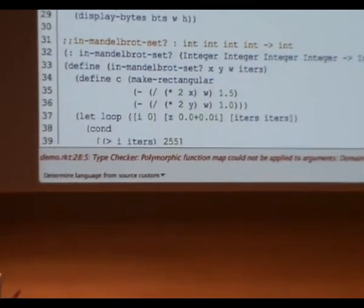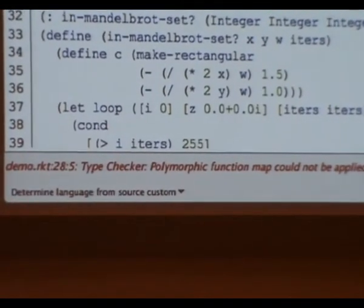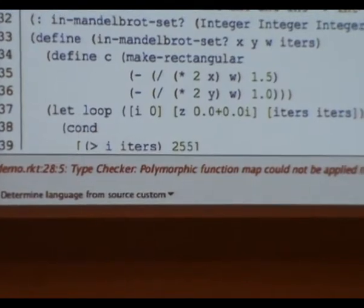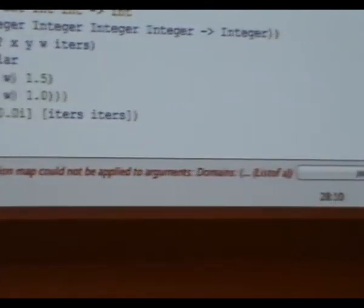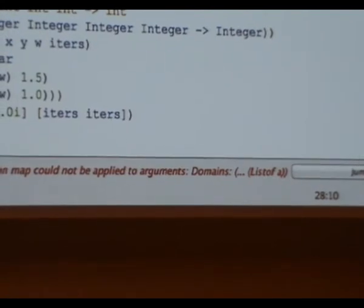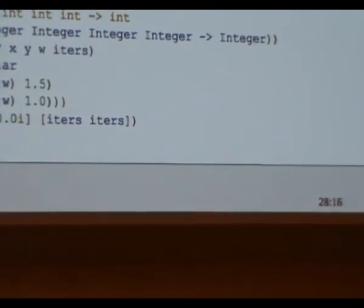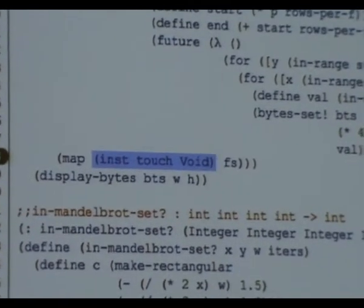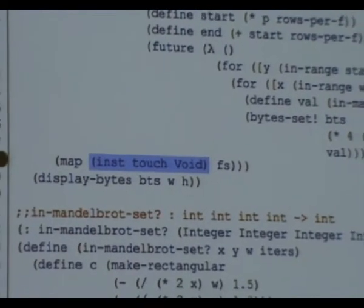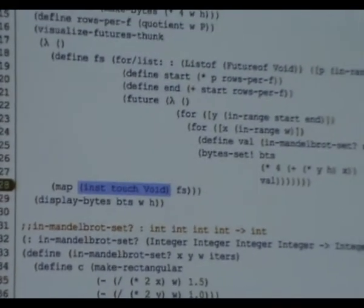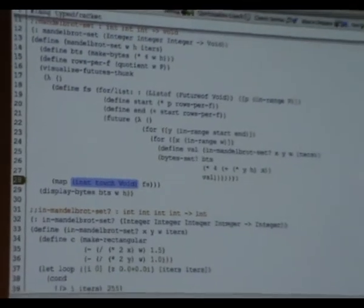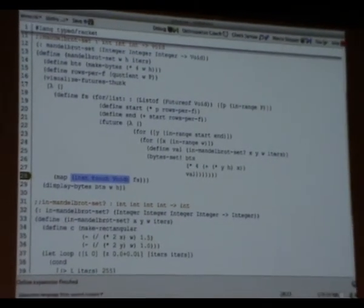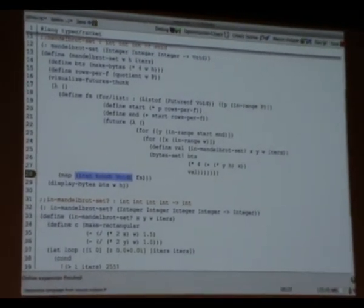So, what we'll do, is annotate this for list construct, and tell the typed Racket what the type of this, the return type of this form is. So, what we're actually returning here, is a list of future void. So, now, we have one other problem. Remember, touch is also polymorphic. So, typed Racket understands that it's a polymorphic function, but we still need to instantiate this function with a type. So, we need to tell typed Racket what the type of this function actually is in this case. So, we say instantiate touch with a return type of void, since these are futures that return void. So, there. That's it. That's all we have to do. So, notice that there's obviously a lot of type inference going on here. So, we only have to make annotations in a few places to get this to work.